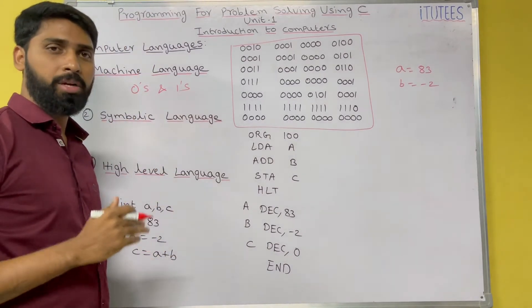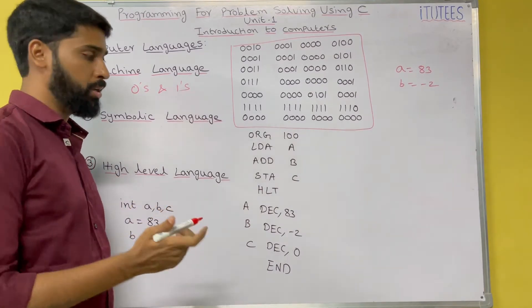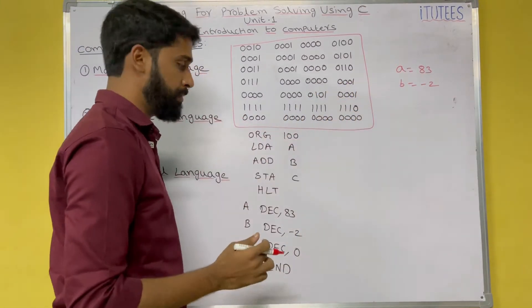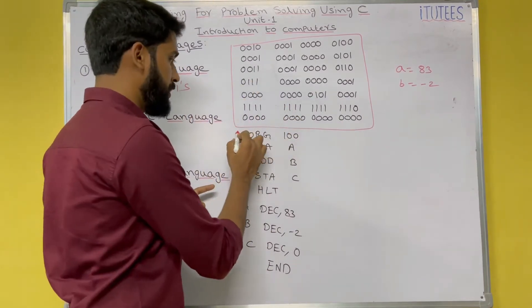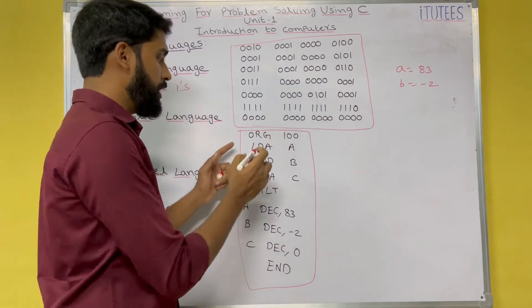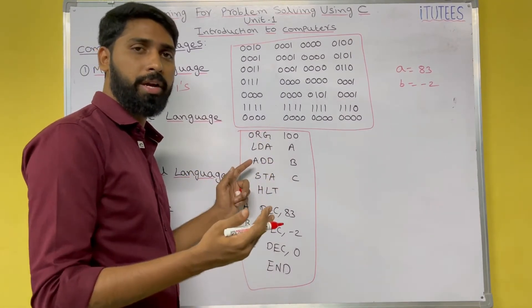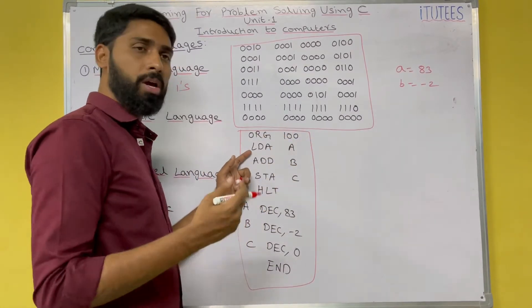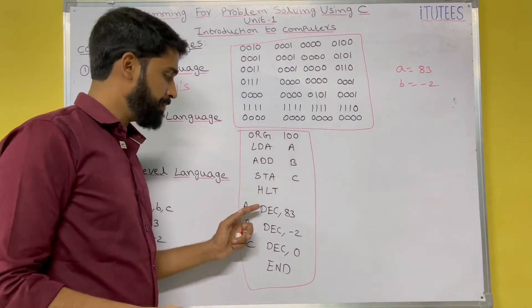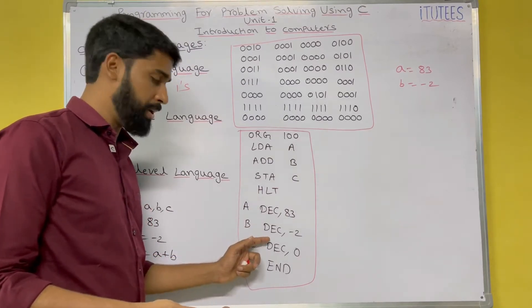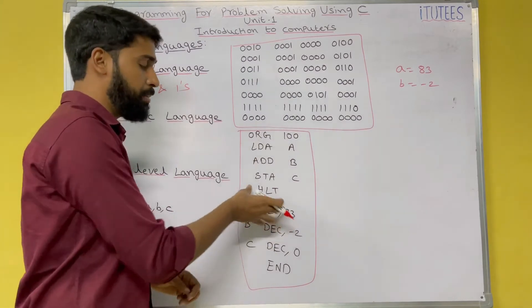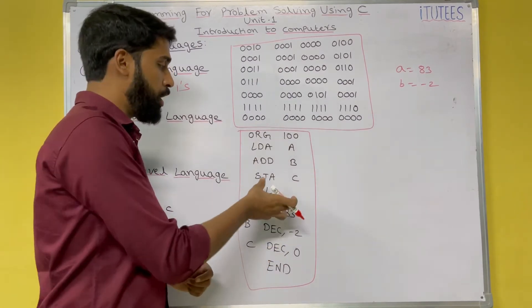Symbolic language is nothing but you are going to use some mnemonics and symbols to write a program. So this is a equals 83, b equals minus two. When comparing to the machine language program, this is the symbolic program — you can understand something. ORG means originate, meaning the program starts at 100. LDA means load, ADD means add, ST means store, HLT means halt, DEC means decimal, and AND means end — that is, end of the program.